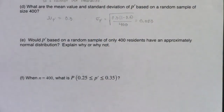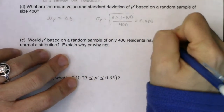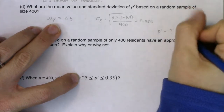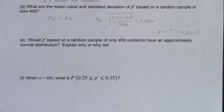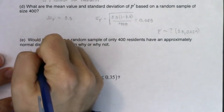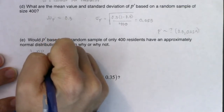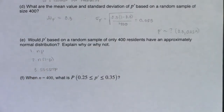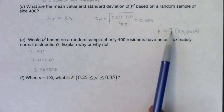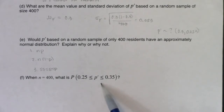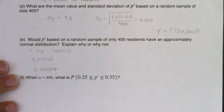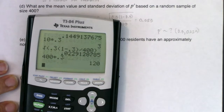So far the sampling distribution has a center of 0.3 and a standard error of 0.023, but there's still the question mark for shape. We need to check all three normality assumptions. First, n × P = 400 × 0.3 = 120, which is definitely greater than or equal to 10. Second, n × (1−P) = 400 × 0.7 = 280, also greater than or equal to 10. These two are the deal-breaker assumptions — if either fails, we stop.